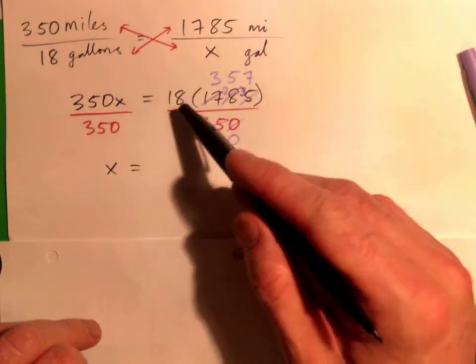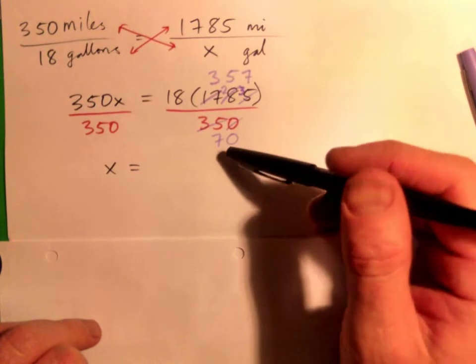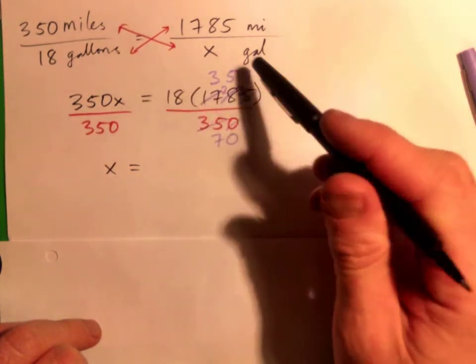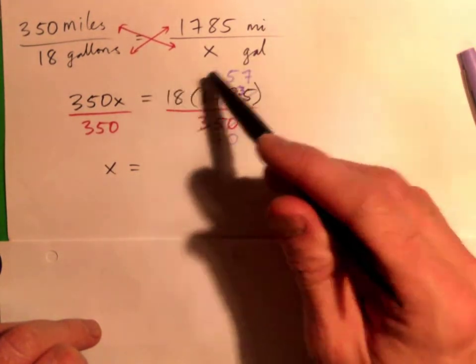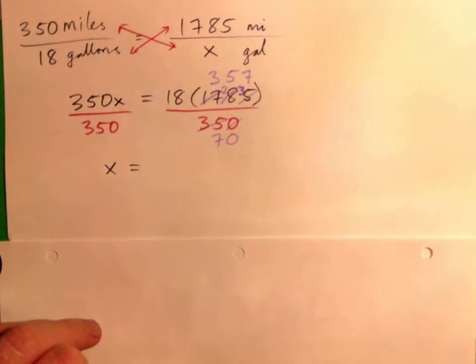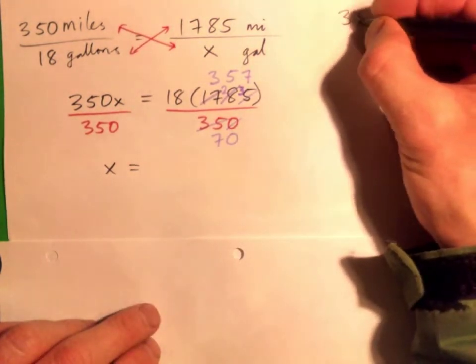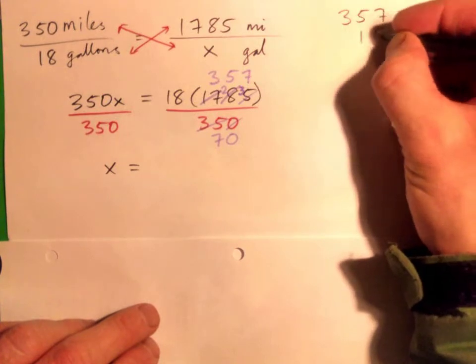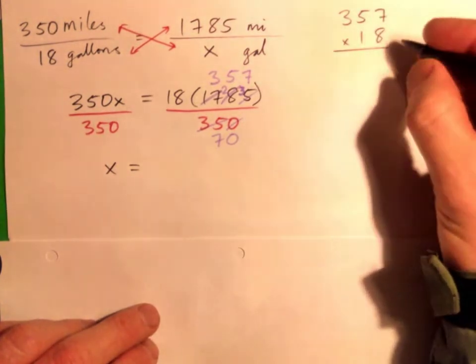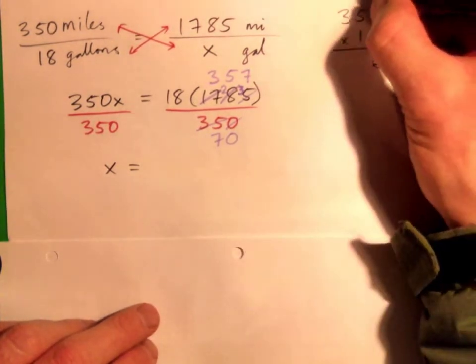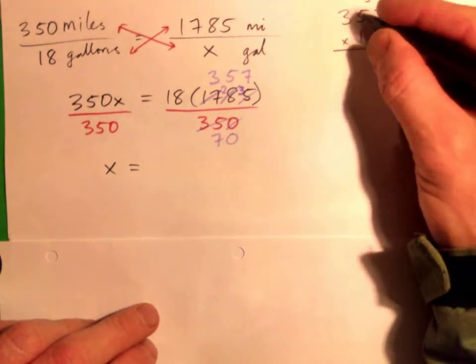Still a bit of work to do here because at the end of the day I can't see anything that will easily cross cancel. So I think you're gonna have to multiply and then divide with long division. So a lot of written work here.